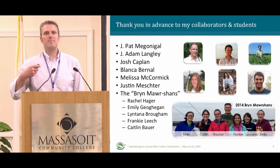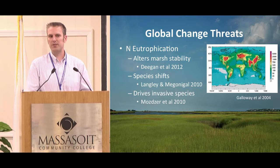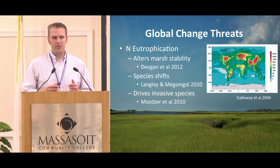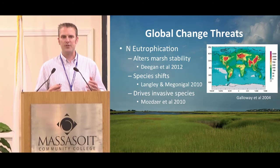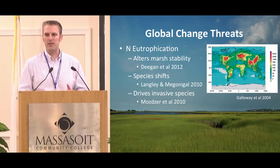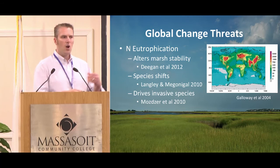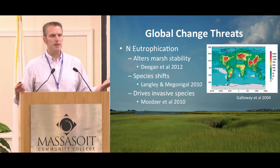We've heard a lot about different global change stressors today, focusing on nitrogen. Jim Galloway proposed that we've doubled the amount of reactive nitrogen in our global nitrogen cycle. As a consequence we've seen lots of potential negative effects, including Creek Bank destabilization where marshes are literally crumbling apart, as shown in the tide project.